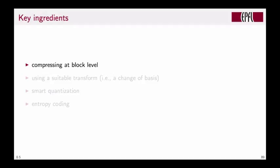Let's look at the key ingredients for JPEG compression. First is compressing at block level. Second is using a suitable transform to move blocks into a different domain—a change of basis. Smart quantization discards irrelevant parts by allocating very few or no bits to some transform coefficients. Finally, entropy coding, borrowed from information theory, compresses the bit stream even more.